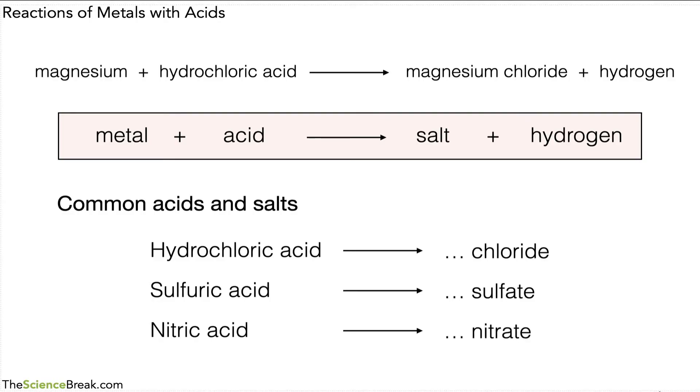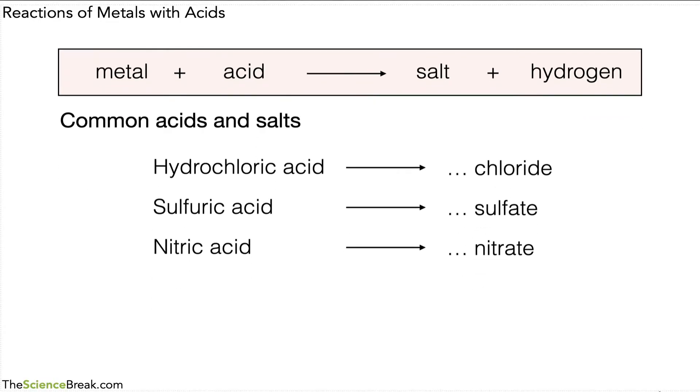So this is quite important to remember and it will help us to predict the name of the salt that's produced when we have a certain metal reacting with a certain acid. So let's keep that on the screen and have a look at an example of how we might use this. So let's just move that out the way slightly.